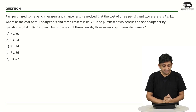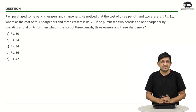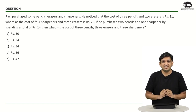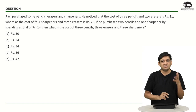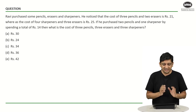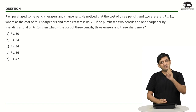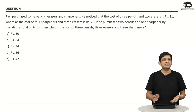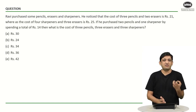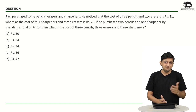Looking at the first question, Ravi purchased some pencils, erasers, sharpeners and so on — we have a lot of data given. People who don't look at the entire question carefully will try to solve the three equations simultaneously to find the answer. That is not the right approach, because the question is too long and has no place in a CET where you are expected to solve many questions in less time.